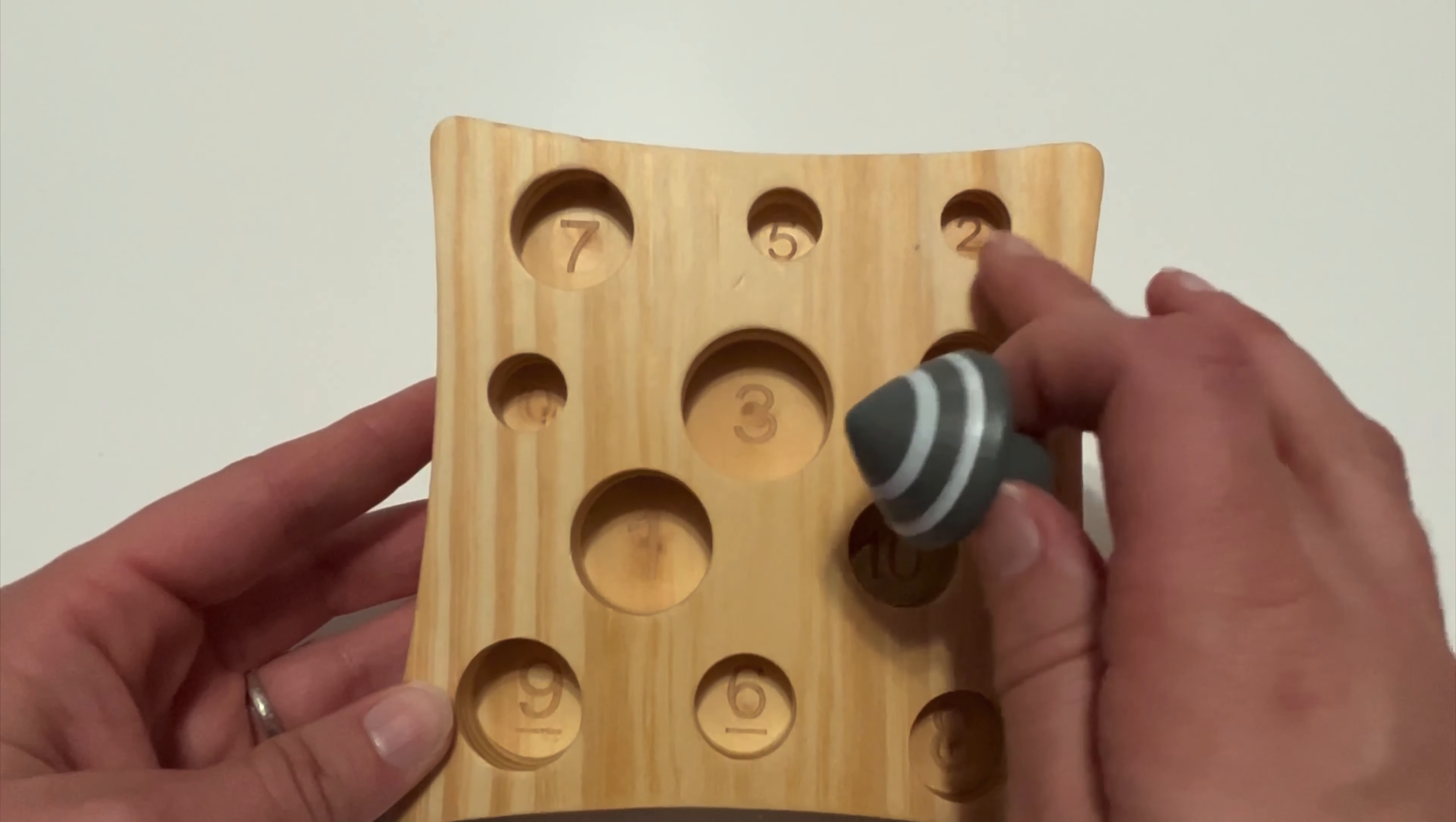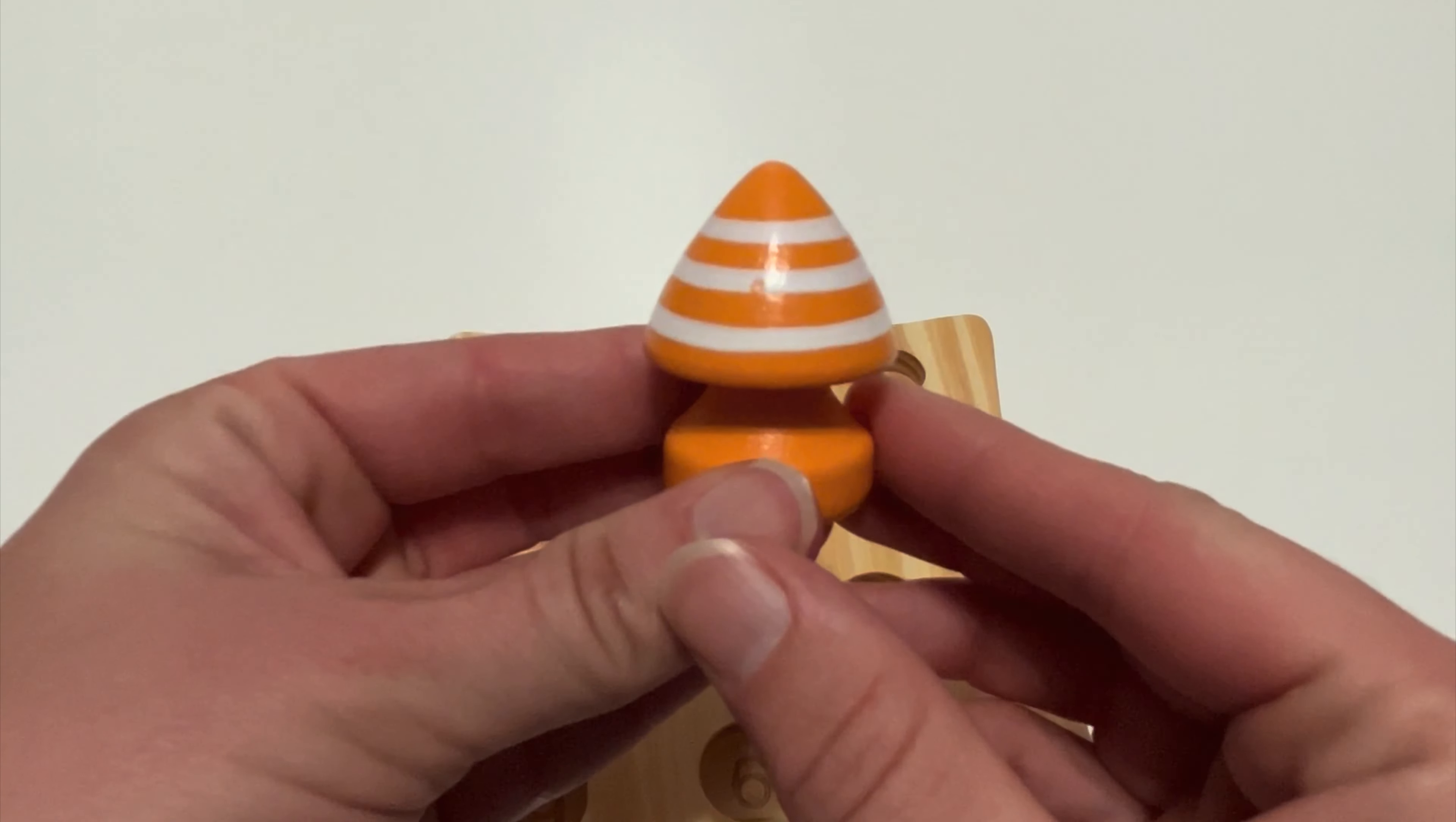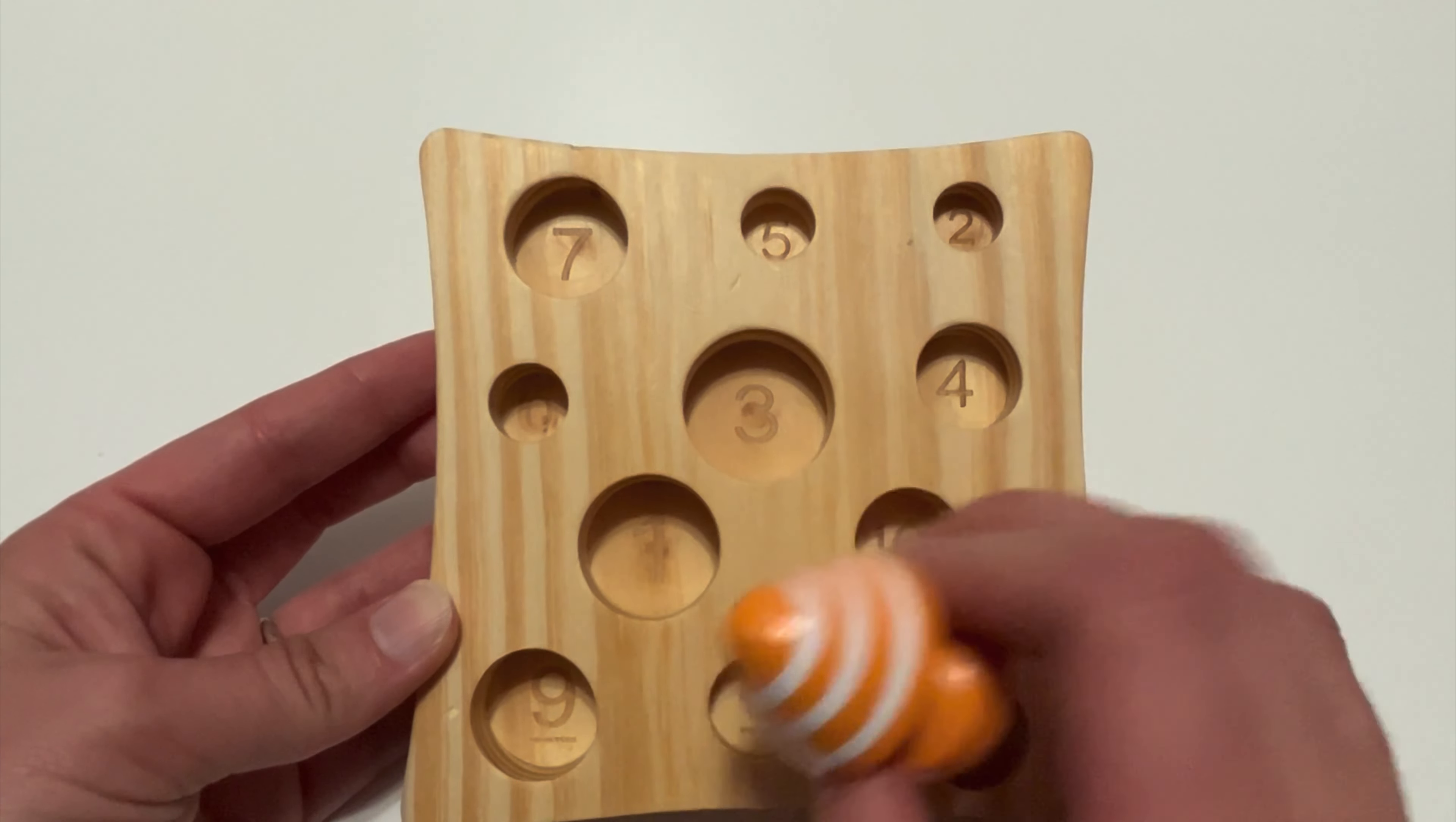That's right. There it is. We got it. And look at this mushroom. How many white stripes does it have? Let's count. One, two, three. And where would it go on our wooden block? That's right. Here's number three.